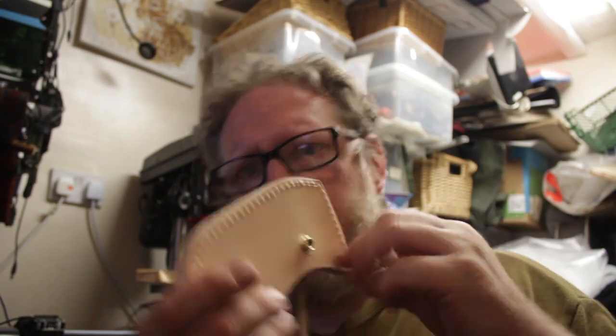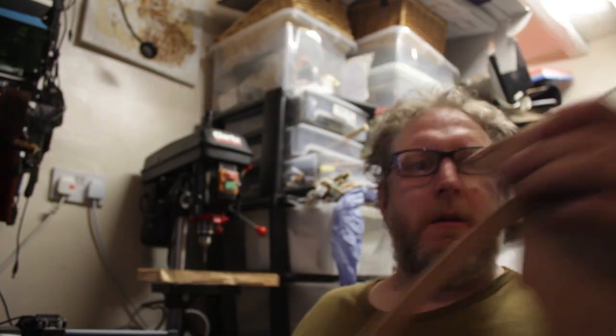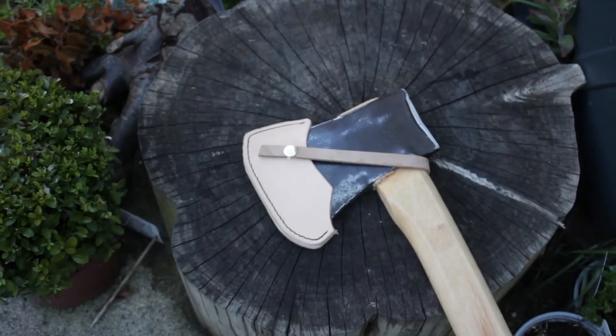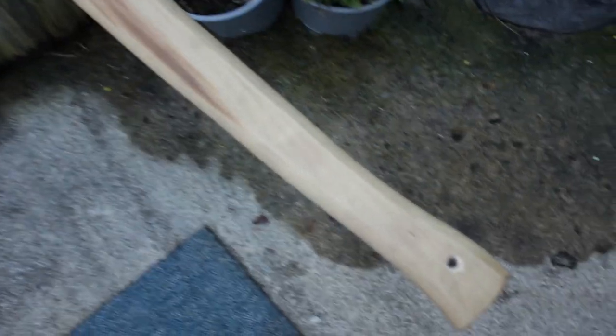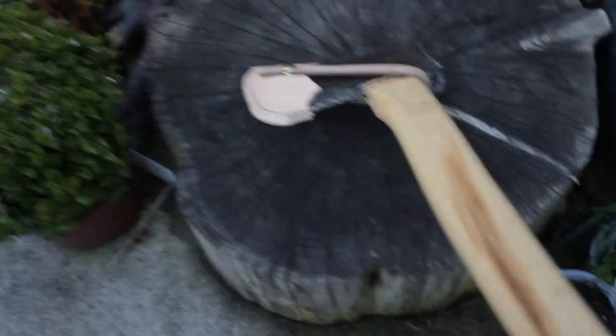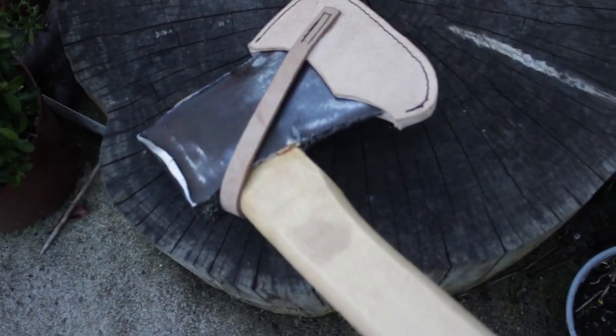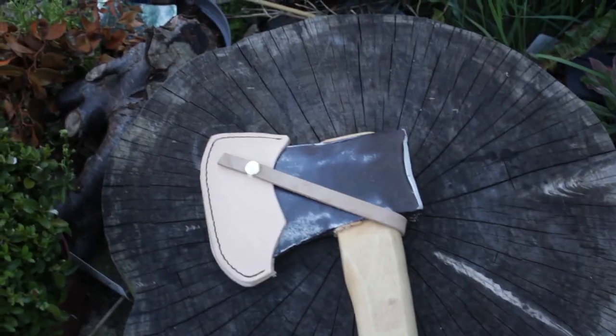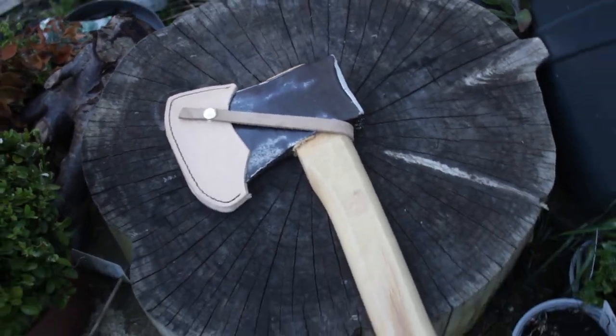Axe mask or axe sheath, there's different names for them. But just offer up the head, draw a 10mm board around, and then stitch it up with a strap and a popper. And it does do so much for the axe. It's covered up, it's safe.